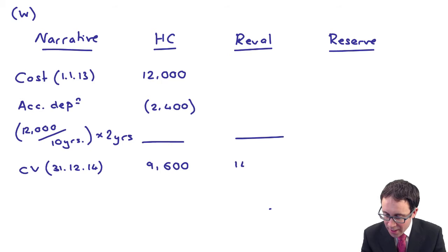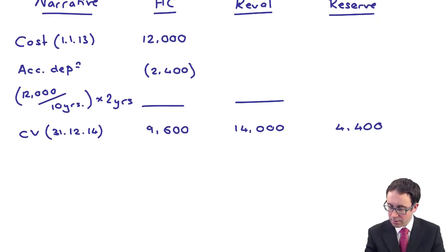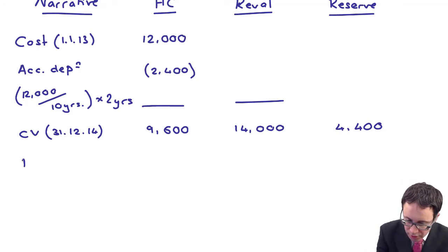I've then revalued the asset to 14 million. If I revalued the asset to 14 million, the reserve at the start of this year would have been 4,400. We haven't dealt with the decrease yet, we're just dealing with the increase. What we need to do now for this year, let's work out the depreciation.